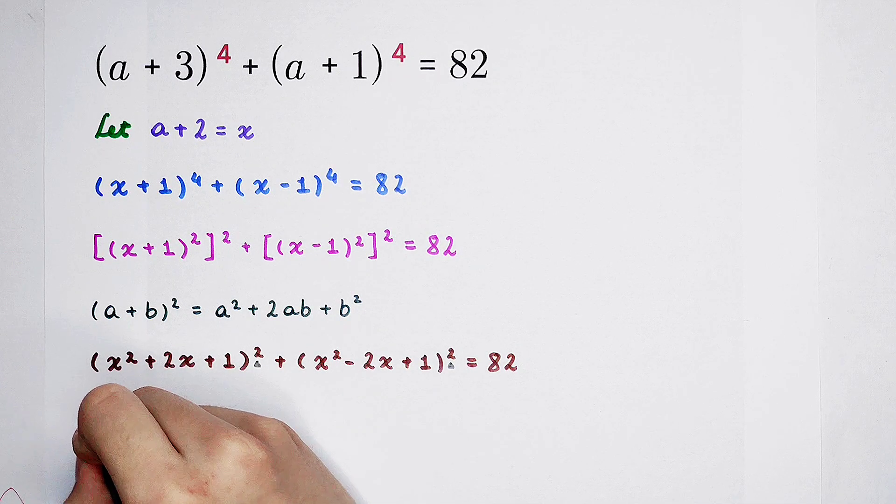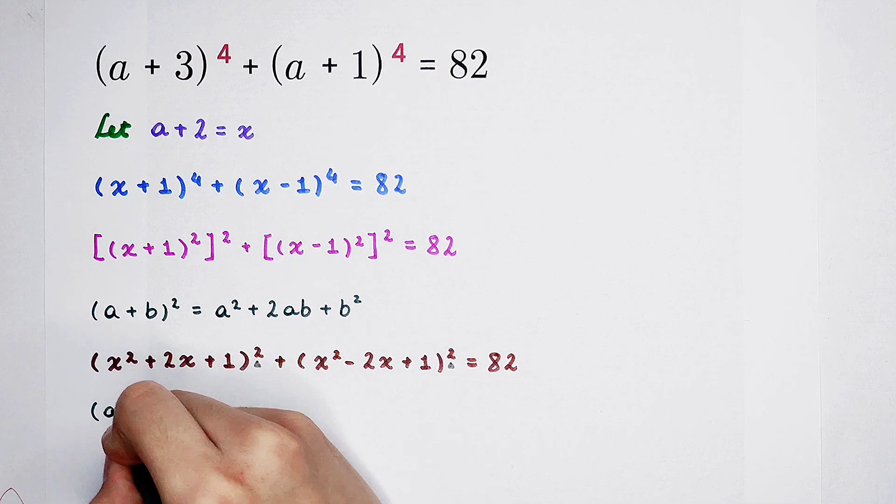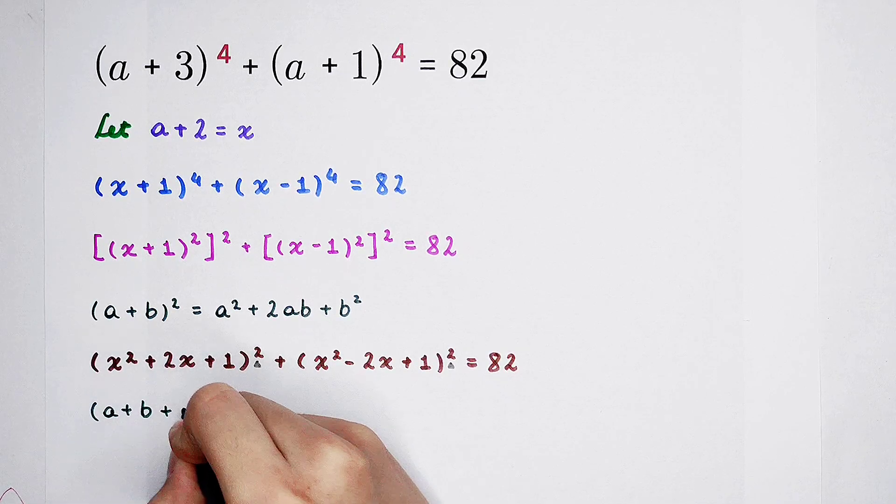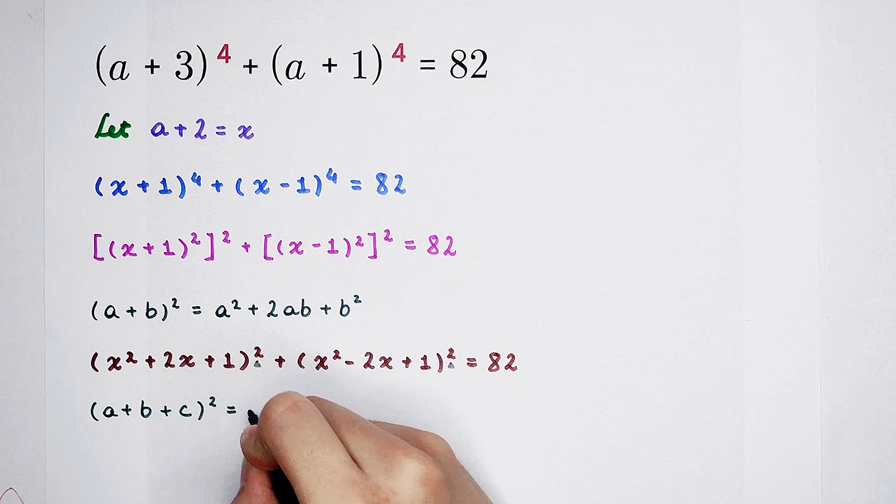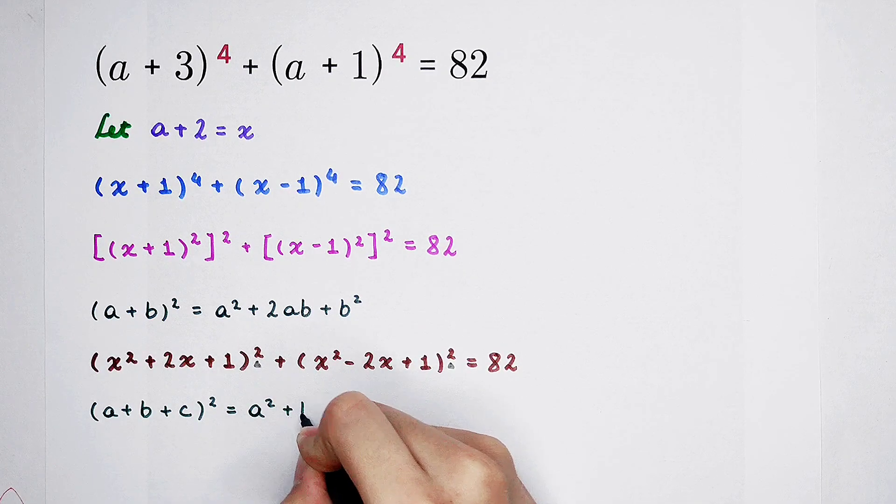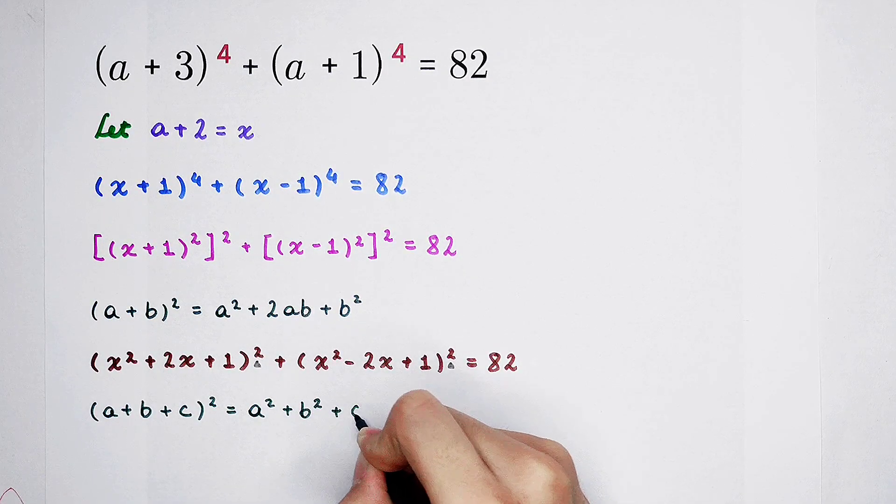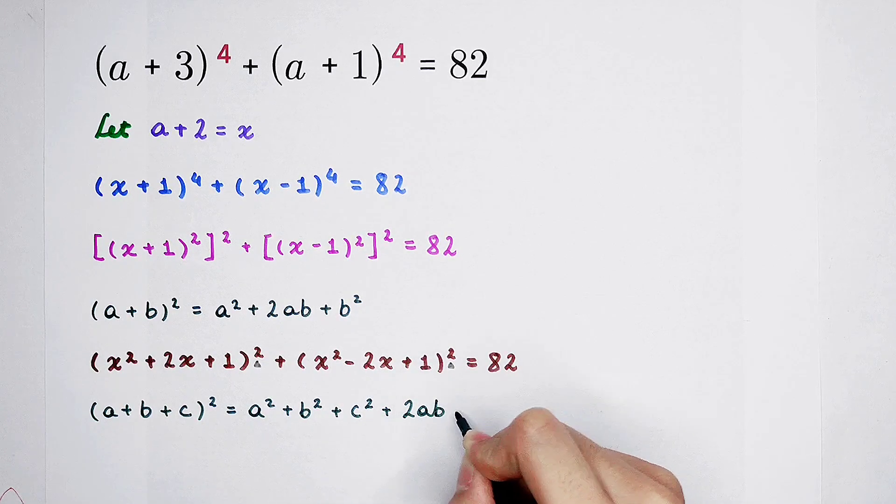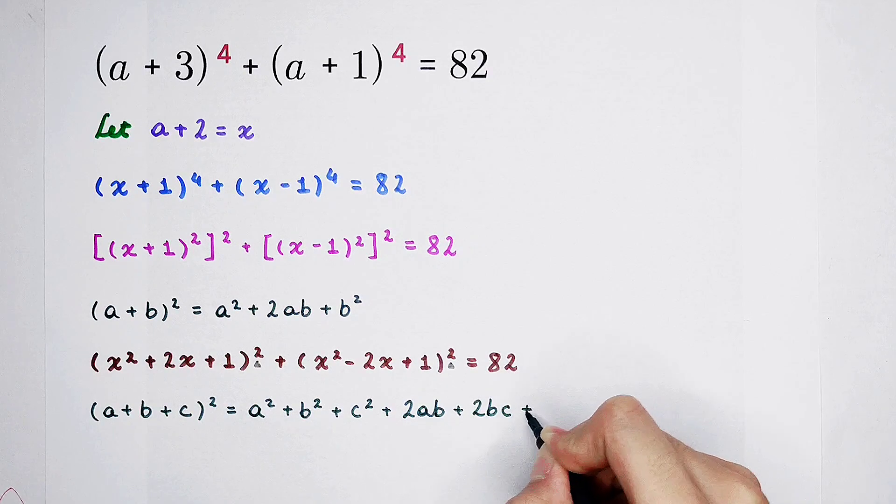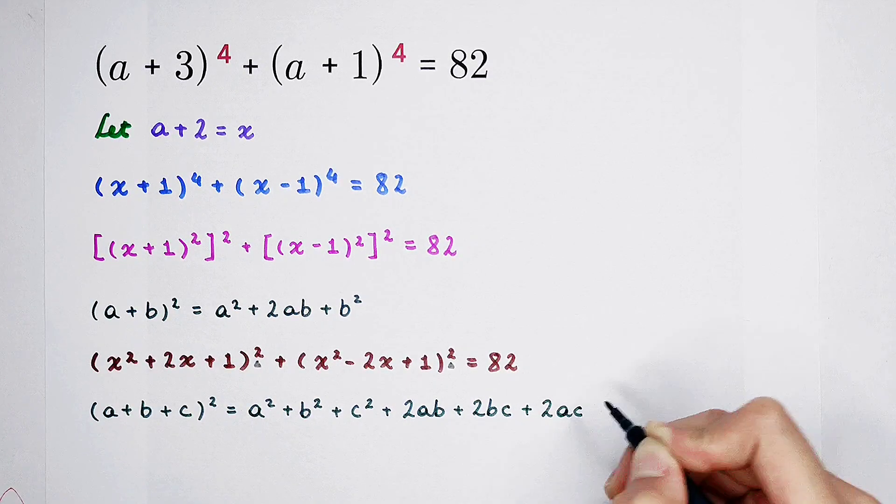A plus B plus C all squared is A squared plus B squared plus C squared, and then 2AB plus 2BC and then plus 2AC.